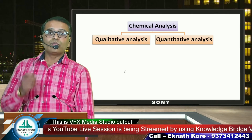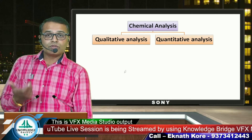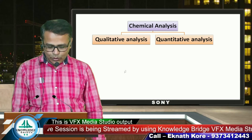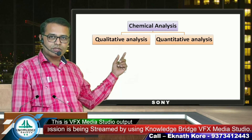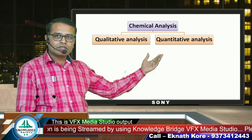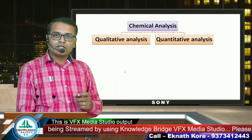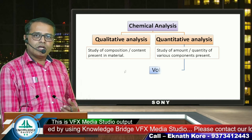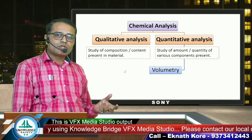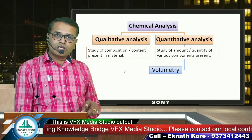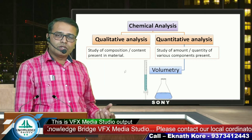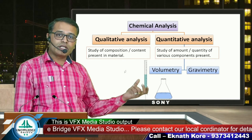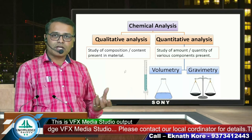What is meant by qualitative? Where we measure the quality. What is quality? Quality is nothing but content or composition — that we call qualitative analysis. What is quantitative analysis? Where we measure the quantity or the amount — that is measured in quantitative analysis. Quantitative analysis is of two types: one is volumetry and the other is gravimetry. Volumetry is where we measure the volumes, and gravimetry is where we measure the masses.